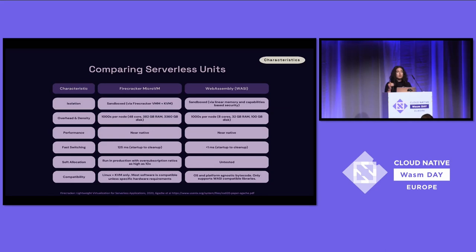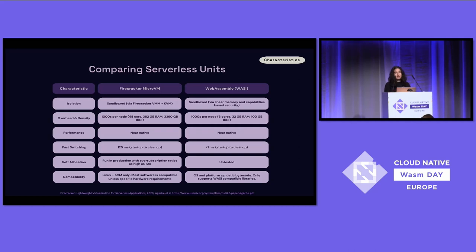In that same paper, they assess Firecracker micro VMs against these characteristics. I went through the same and did it for WebAssembly. Both are sandboxed — isolated, secure units. While we can put thousands on a single node for both, you can get more from the same hardware with WebAssembly. With beefier hardware they put a thousand on a single node, while with just 8 cores and 32 GB of RAM during load testing of Fermion Cloud, we were able to have thousands of WebAssembly applications. Most importantly, while it takes 125 milliseconds to start a Firecracker micro VM, it takes less than a millisecond to instantiate and run a WebAssembly module.